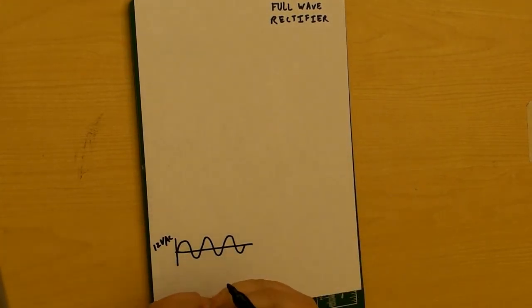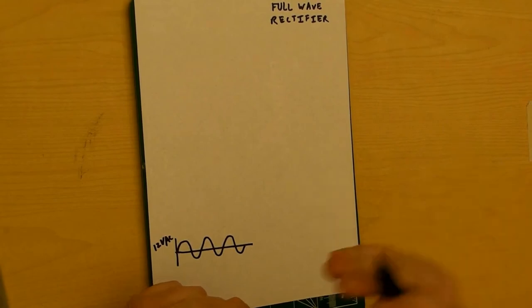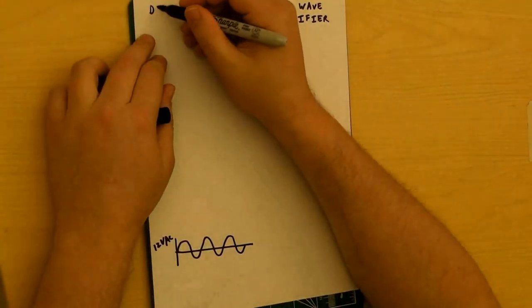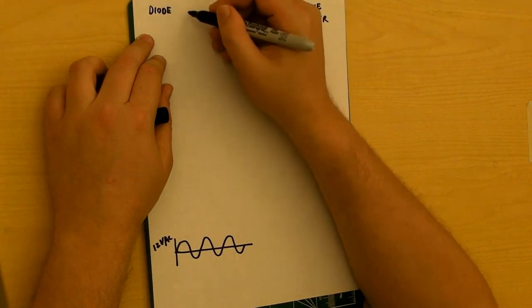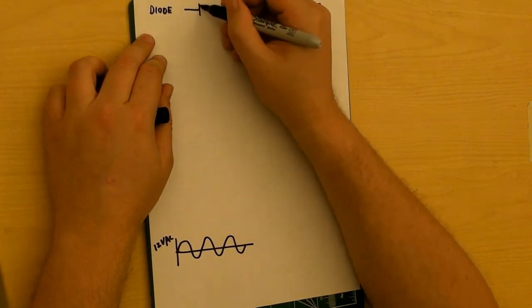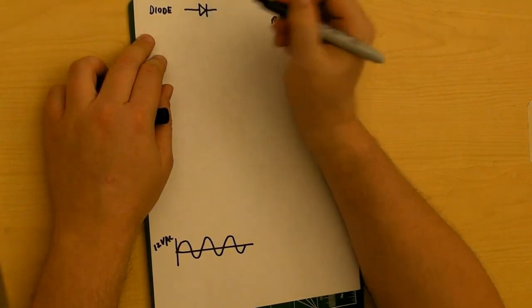So how do we do that? Remember in the last lecture we talked about a diode. And a diode allows current to flow only in one direction in its normal mode.